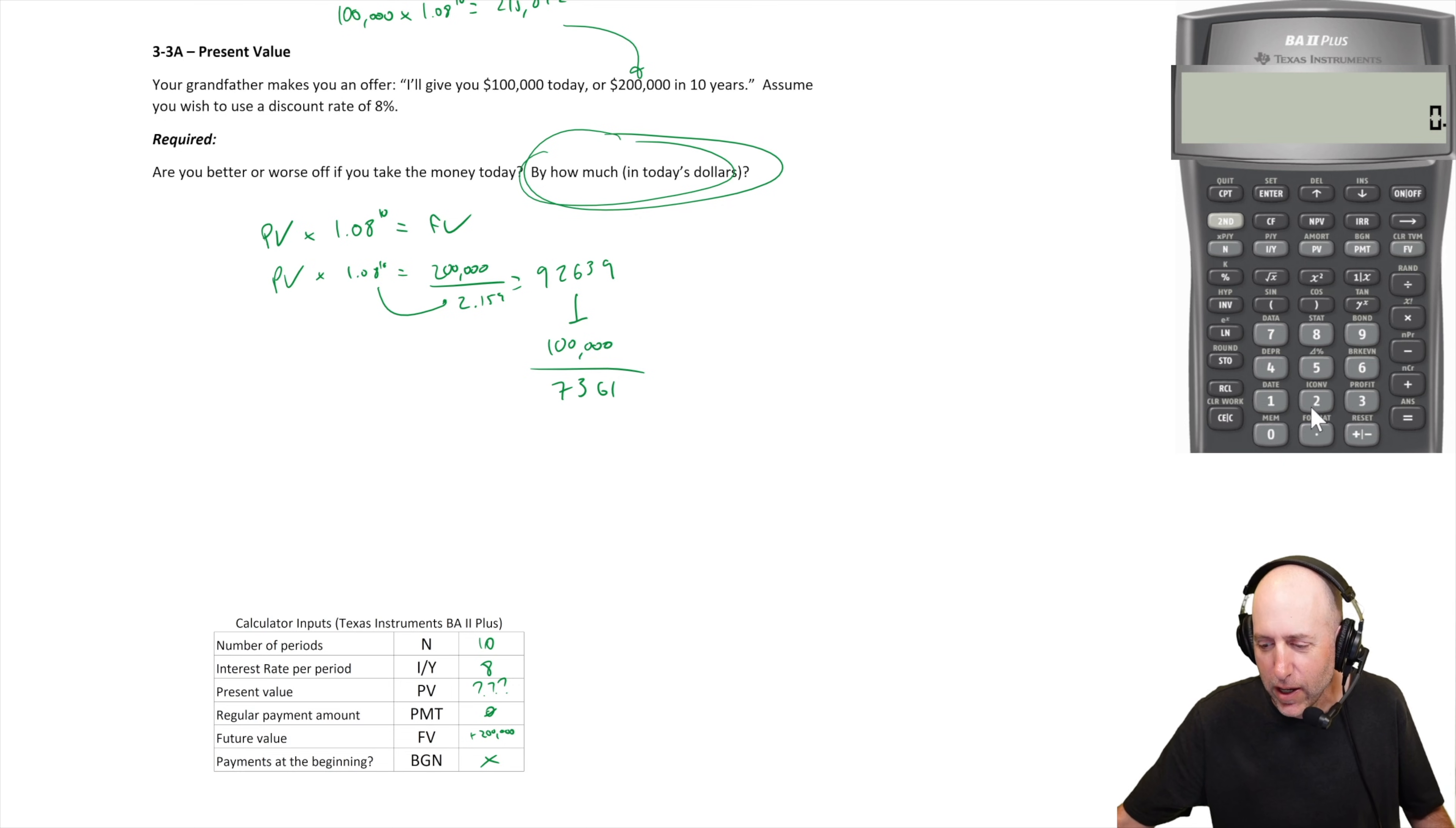10 goes in as N. 8 goes in as IY. 0 goes in as PMT. And 200 goes in as FV.